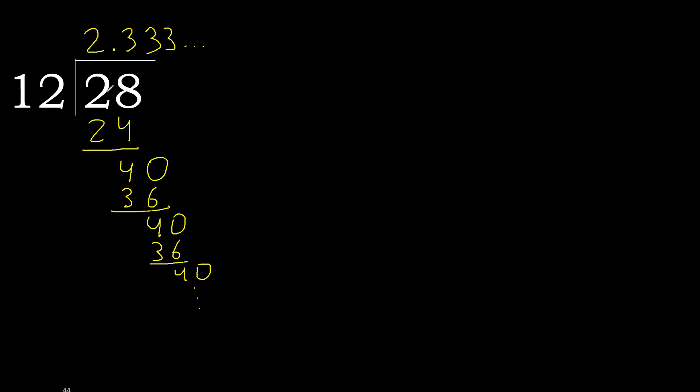28 divided by 12 is 2, and after the decimal point, 3 repeating.